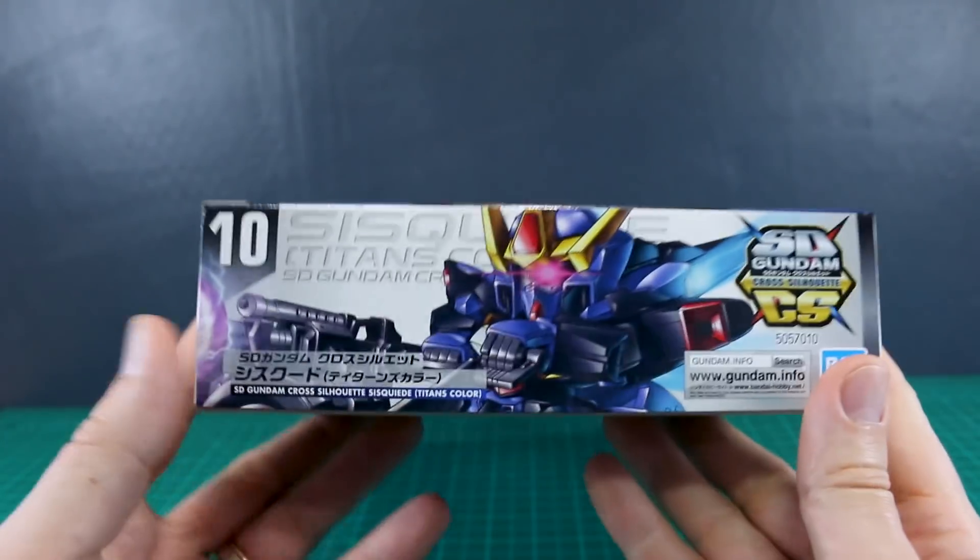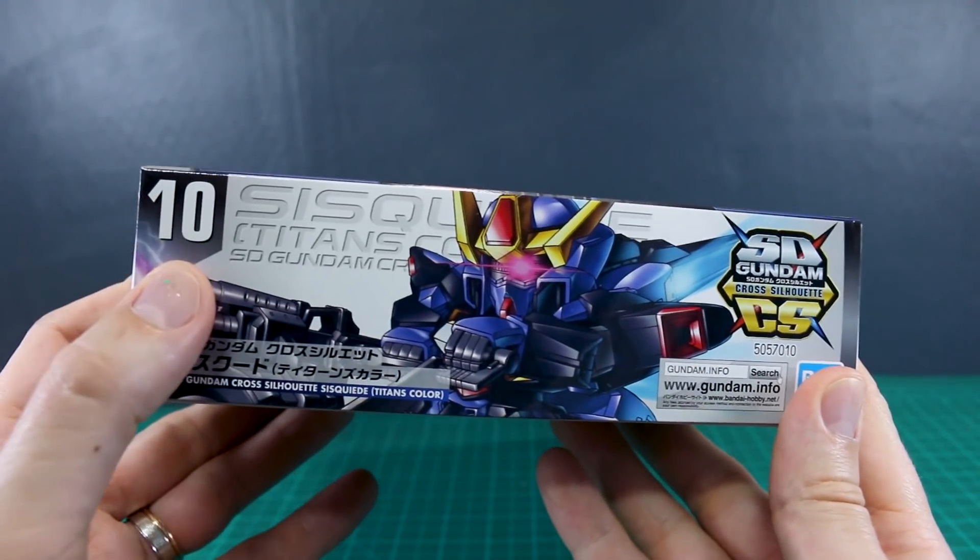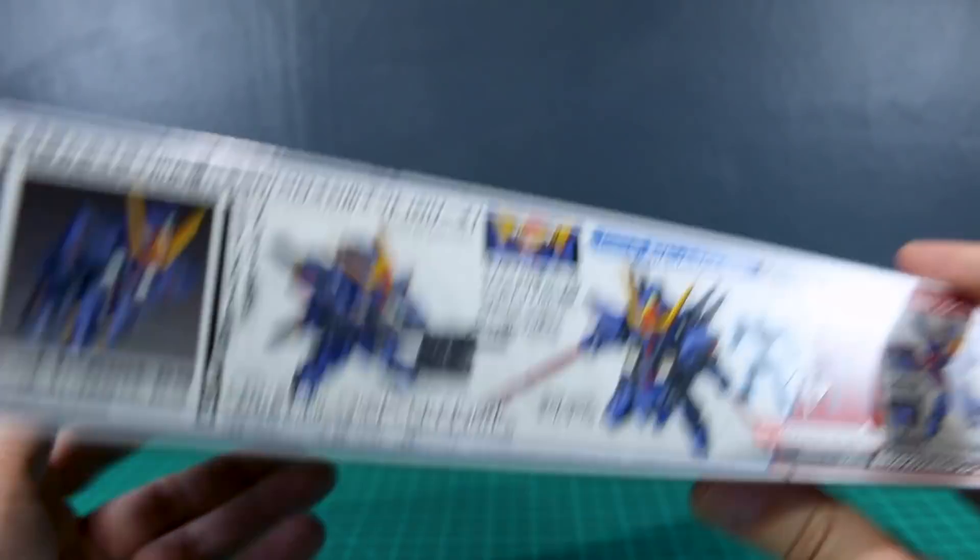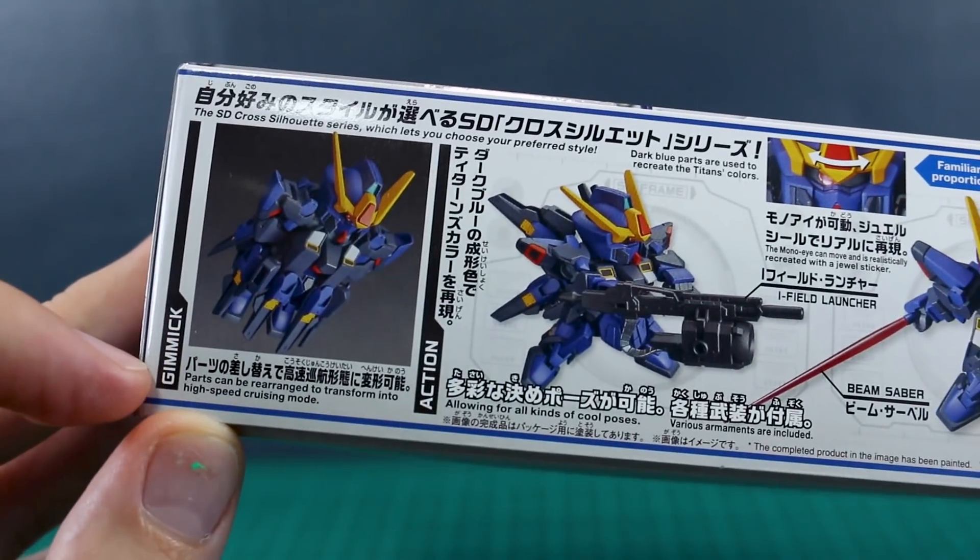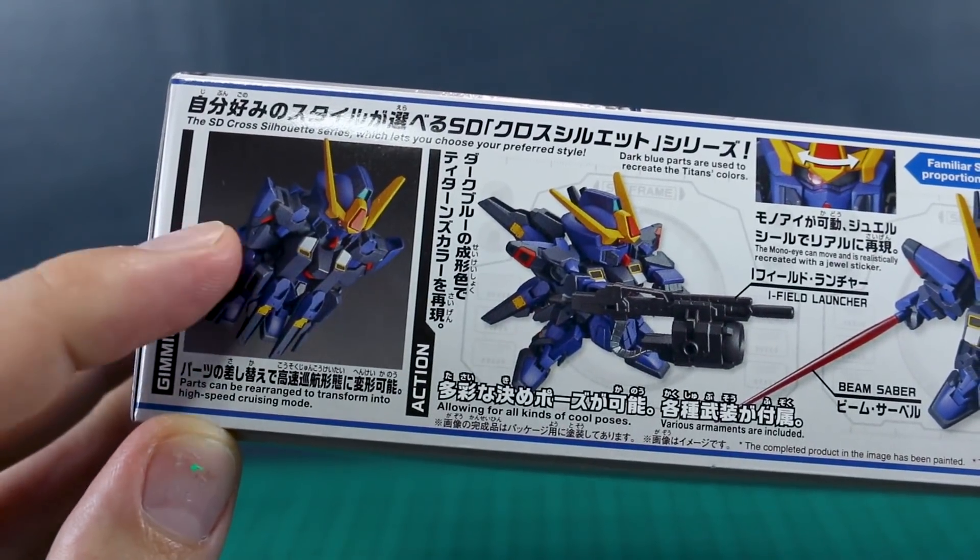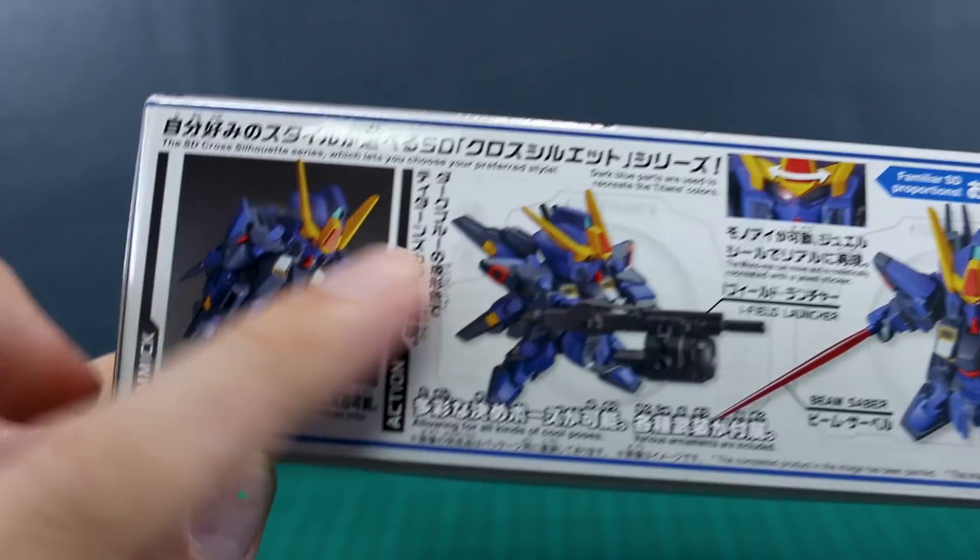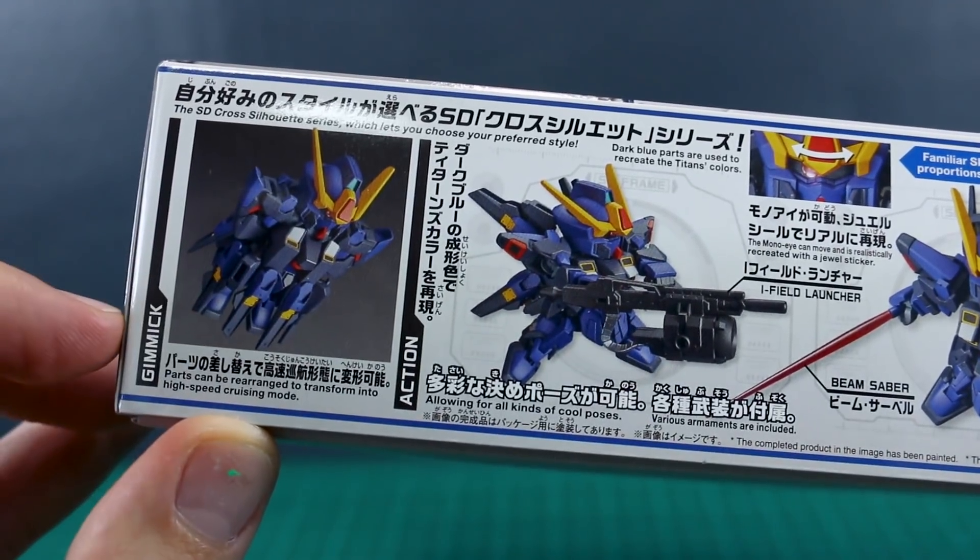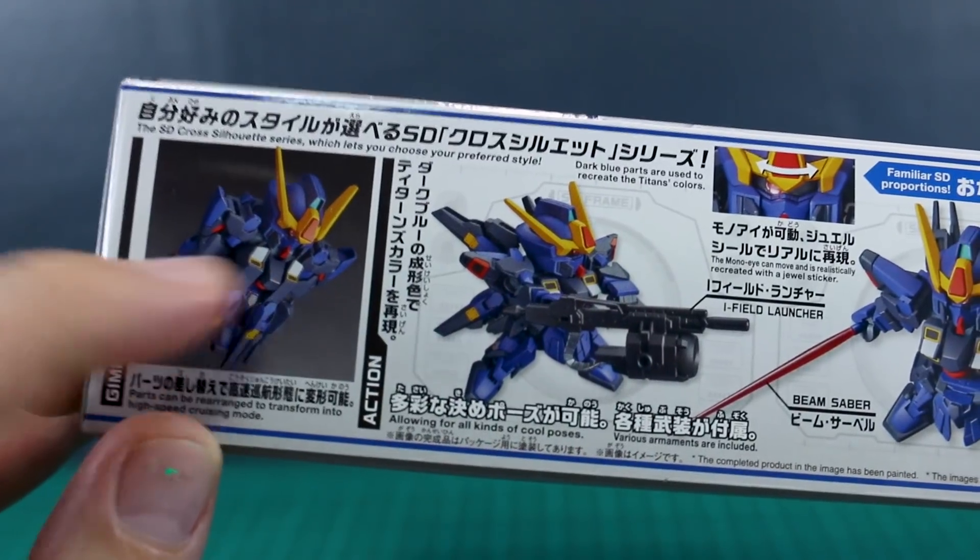There's a lot of stuff to look at here on the box. So number one, let's just take a look here on the side. This is number 10 in the line of SD Cross Silhouette. Here it shows that you can transform into its high-speed cruising mode by taking those parts there from the back, those wing bits, and you can mount those around on the kit for that mode.